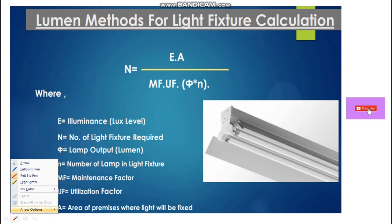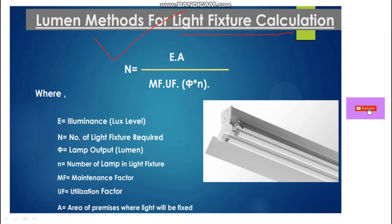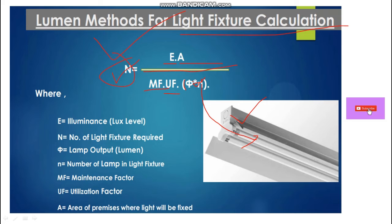Now we have taken all the values required for the calculation formula. This is the formula for light fixture calculation: N = (E × A) / (MF × UF × Φ × n), where N is the number of light fixtures, E is the illuminance in lux, A is the area, MF is the maintenance factor, UF is the utilization factor, Φ is the lumen output, and small n is the number of lamps inside one fixture set.